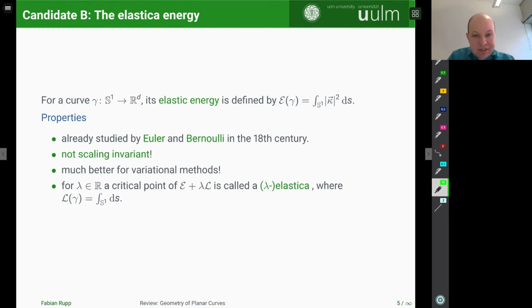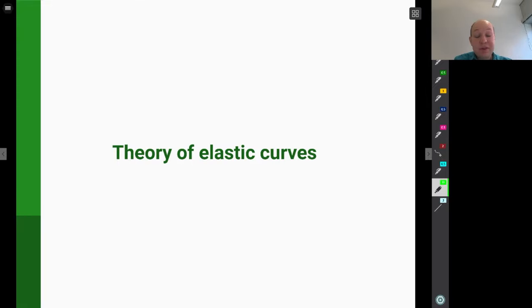So of course, one can also speak about the critical points of such energies and for this elastic energy, because it's not scaling invariant, one discusses usually a slightly larger class of critical points, namely critical points for the penalized functional E plus λL, where L is the length of the curve. And critical points for this energy are then called λ elastica and they are very interesting objects and we will see how they look soon.